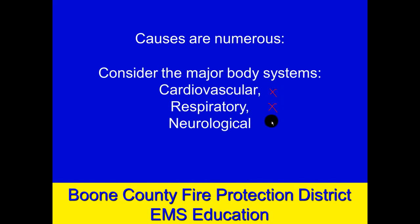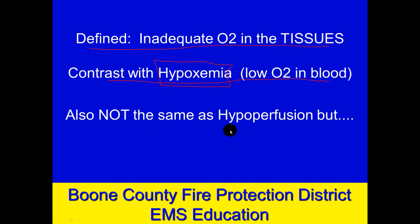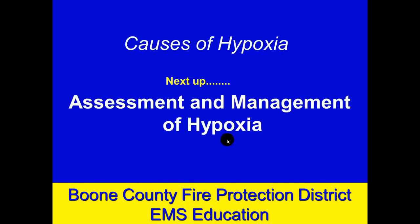So now we've got a ton of cardiovascular causes, a ton of respiratory causes, and quite a few neurological causes. Hypoxia — inadequate oxygen delivered to the tissues — can happen for many reasons. It's best to look through those major body systems and assess their function. Don't confuse similar-sounding terms: hypoxemia is low O2 in the blood, not the tissues. And hypoperfusion is certainly a culprit in hypoxia, but you can have hypoxia without hypoperfusion, as with a neurological or respiratory problem. The next lesson will cover how to assess for hypoxia and how to manage it.